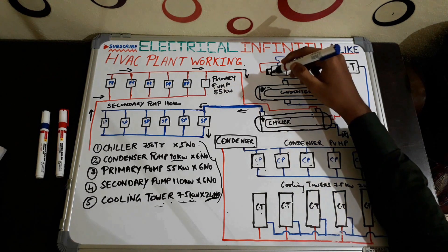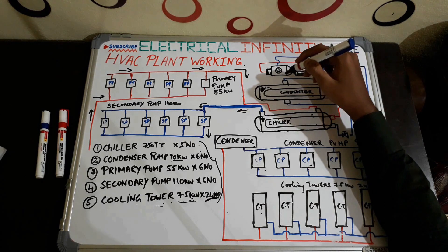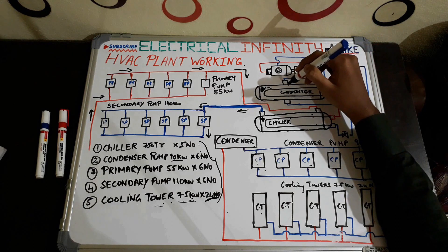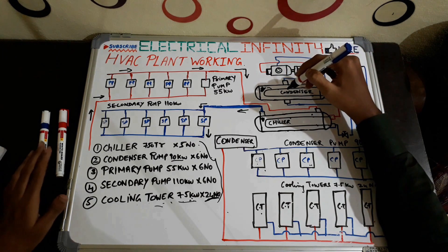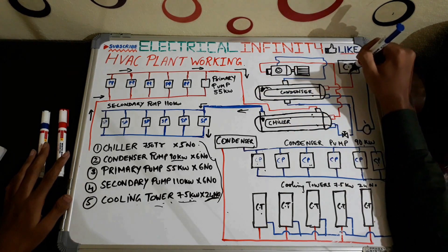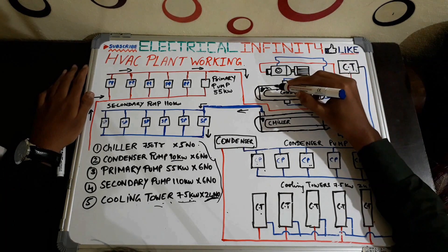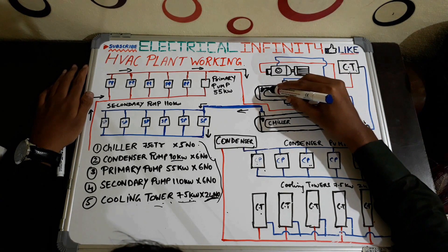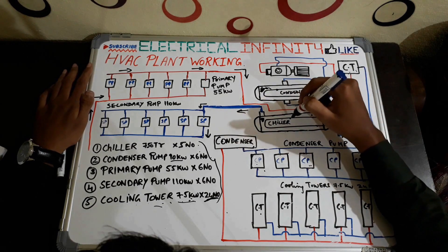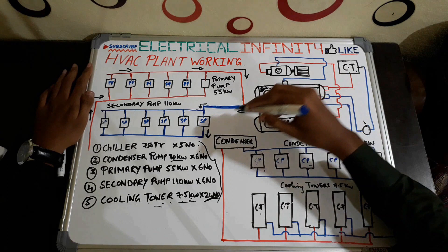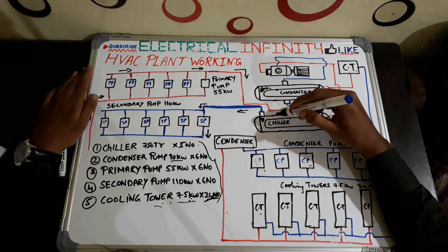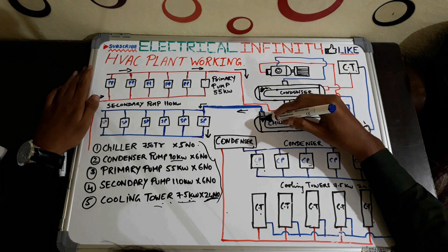The compressor compresses the high-temperature refrigerant and sends it to the condenser for cooling, where heat exchange takes place between the refrigerant in the shell type and the cooling water in the tube type. In the chiller, the refrigerant is in the tube type and the building cooling water is in the shell type — so heat exchange in the chiller takes place between the refrigerant in the tube type and the water in the shell type.